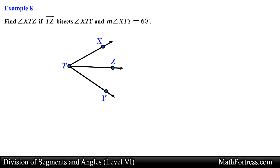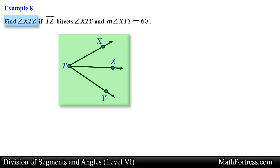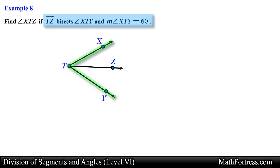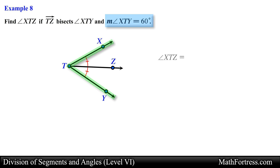Find angle XTZ if Ray TZ bisects angle XTY and angle XTY equals 60 degrees. Since Ray TZ bisects angle XTY, we know that angle XTZ and angle YTZ are congruent, so we draw single arc marks for each of these angles. We also know that angle XTY is equal to 60 degrees. Since an angle bisector splits the angle equally, the measure of angle XTZ is half the measure of angle XTY. In this case the measure of angle XTZ is equal to 30 degrees, and this is our final answer.